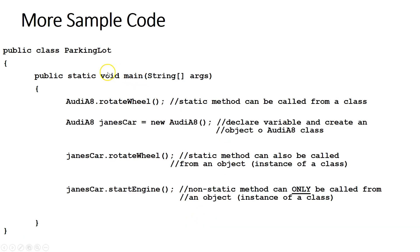All right, here's some more sample code about how we might use the Audi A8 class. So we've got our main method. Here, I'm calling rotate wheel. I'm calling it from the class. This is legal to do because rotate wheel is a static method. Here, I'm declaring a new variable called Jane's car. The variable is of type Audi A8. And we're creating a new object. And Jane's car has a pointer that's pointing at that new object.